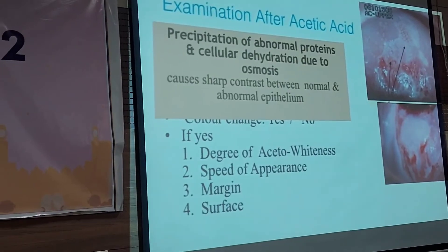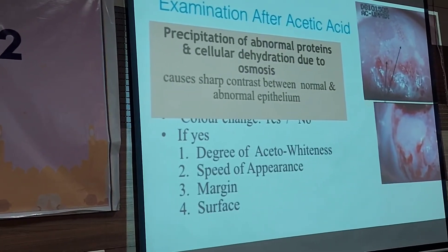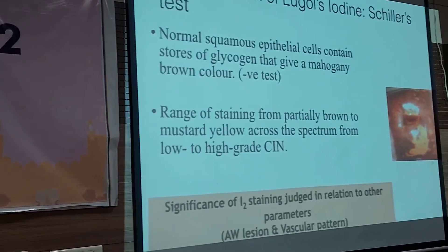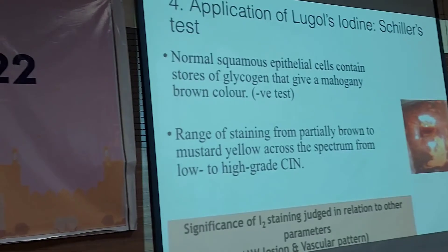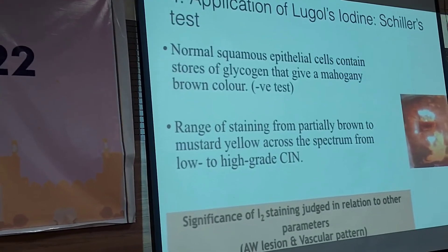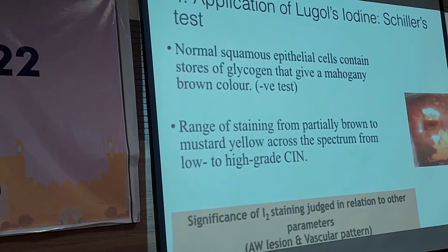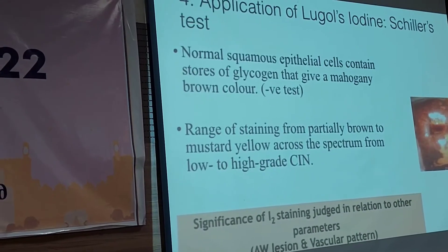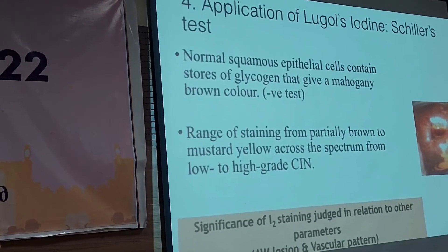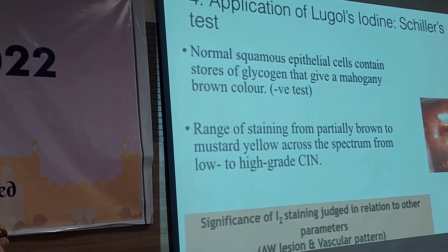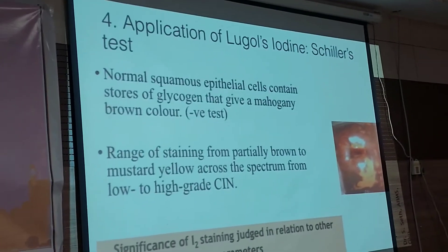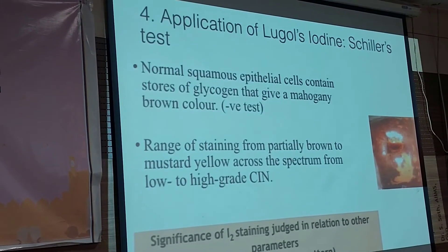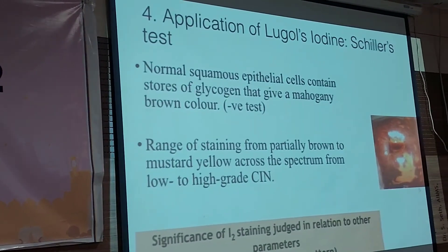Once all the aceto-white areas have been seen and findings noted, take photographs of the affected areas using the digital colposcope, or draw and record the aceto-white regions on a diagram or reporting sheet.